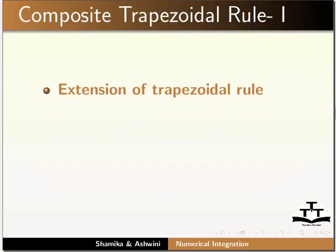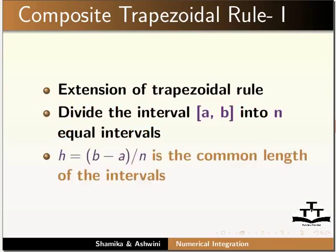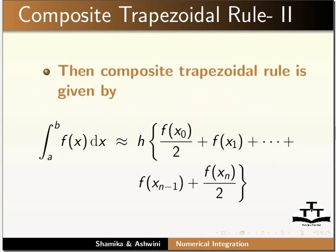Let us study the composite trapezoidal rule. This rule is the extension of the trapezoidal rule. We divide the interval [a, b] into n equal intervals. Then h equals (b minus a) divided by n is the common length of the intervals. The composite trapezoidal rule gives the integral of f(x) from a to b as approximately equal to h multiplied by the sum of the values of the function at x0 to xn.